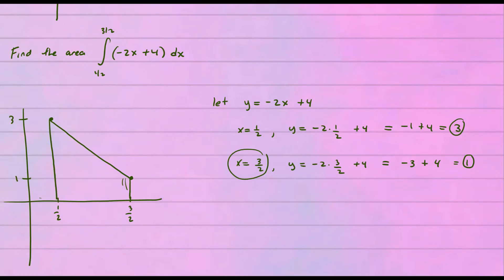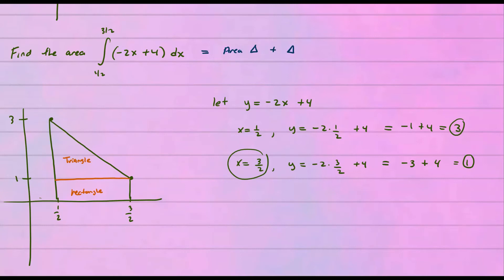This is an interesting problem because the area will be composed of two different geometric shapes. If you draw a line right at y = 1, you have two different shapes: a triangle on top and a rectangle on the bottom. So the total area is going to be the area of the triangle plus the area of the rectangle.